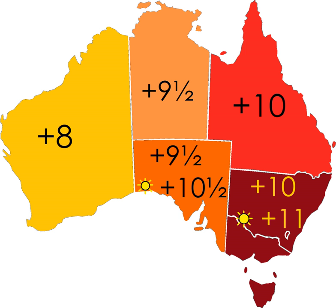The 13 zones for Australia are given by zone.tab of the IANA time zone database.